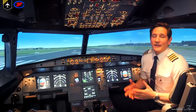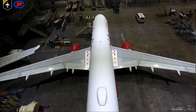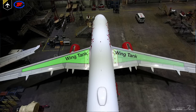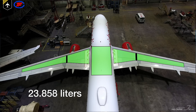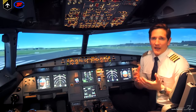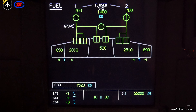The fuel is stored in three tanks: the left and right wing tank and the center tank. The wing tanks are further divided into an inner tank and an outer tank. The total usable fuel capacity is 23,858 liters or 6,302 US gallons on the Airbus A320 model. Let's look at the ECAM fuel display.